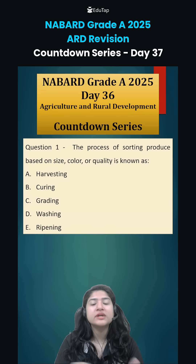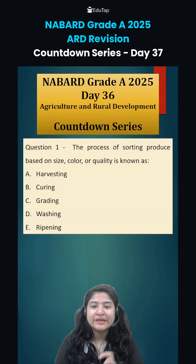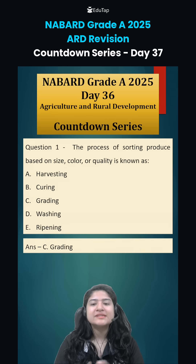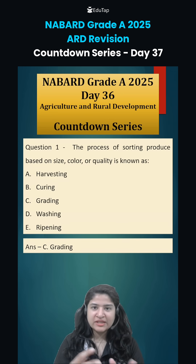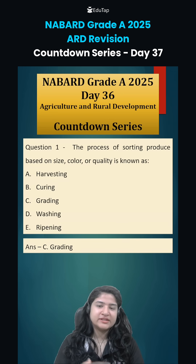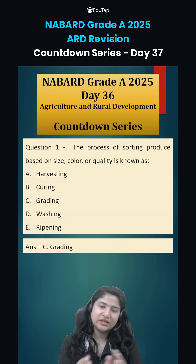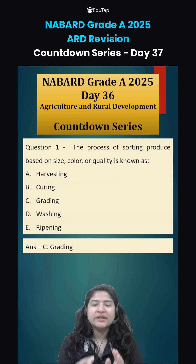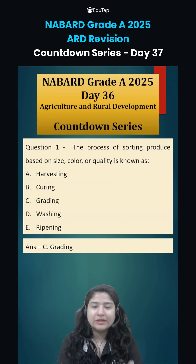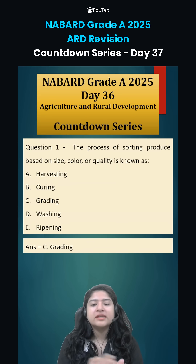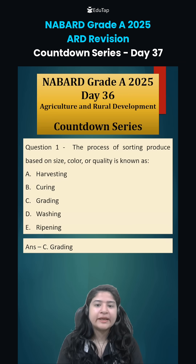It is a post-harvesting operation in which we segregate the harvested produce based on similar shape, similar size, and similar color, so that they can have better market value. That is known as grading.